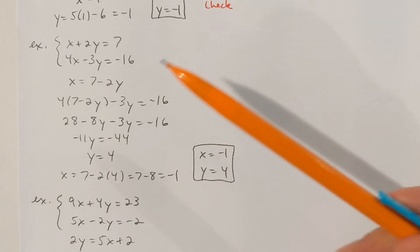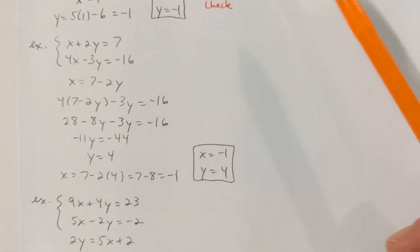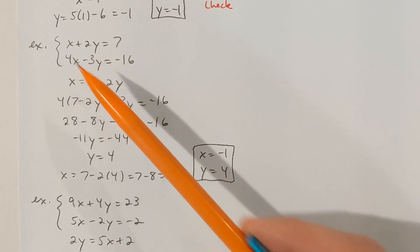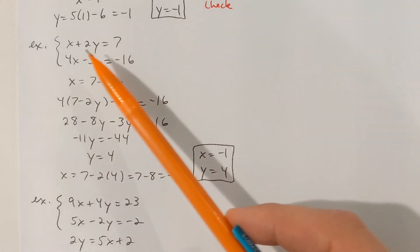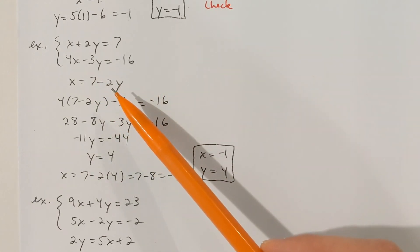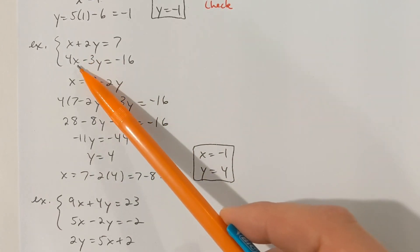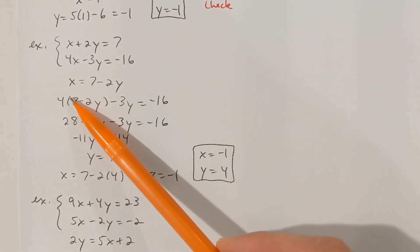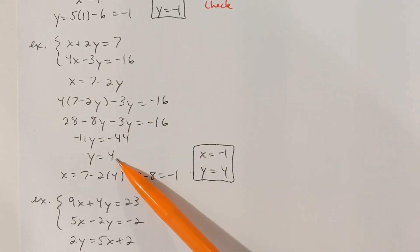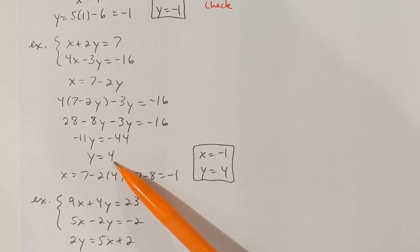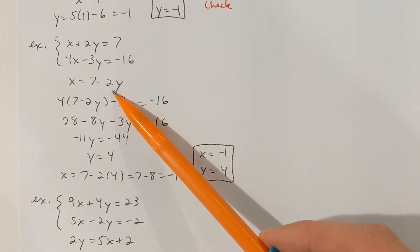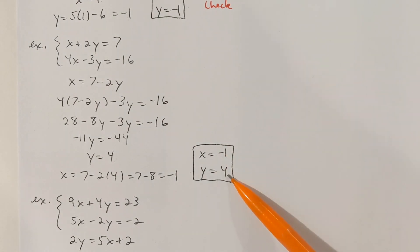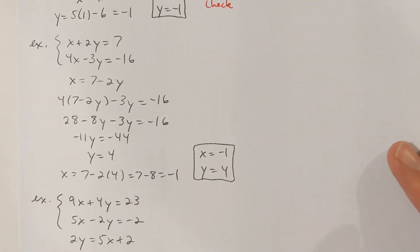Here's another example using the substitution method. I see a coefficient of 1 in front of x in the first equation. Solving the first equation for x gives x equals 7 minus 2y. I substitute that into the second equation where I see x, so everything is in terms of y. I find y equals 4. Knowing that y is 4, I plug that into my substitution equation and find x equals negative 1. So x equal negative 1, y equal 4 is the solution to that system.